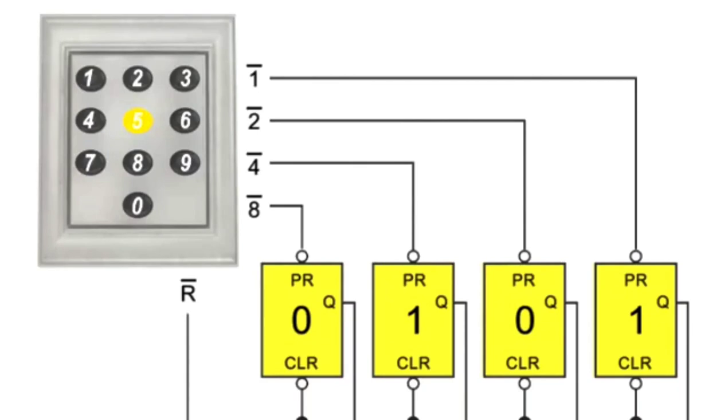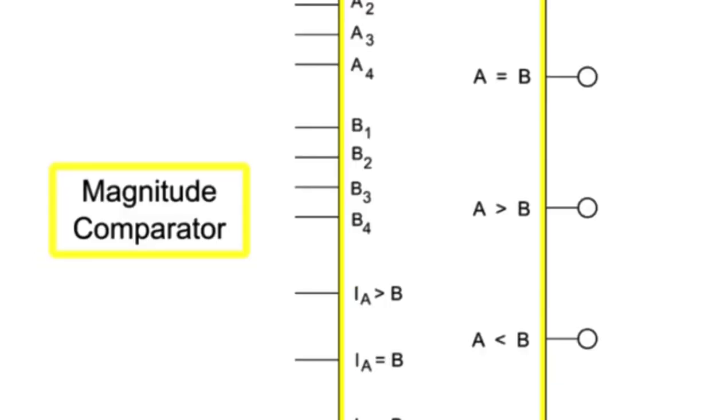After the desired position is received, the magnitude comparator compares the 4-bit input A from the user input to the 4-bit input B of the encoder feedback. If A is larger than B, the A is greater than B output is activated. If B is larger than A, the A is less than B output is activated. If A is equal to B, the A is equal to B output is activated.